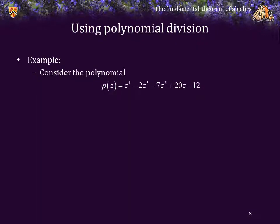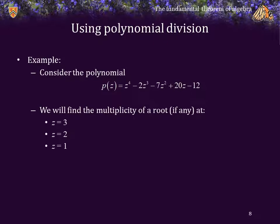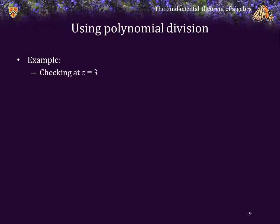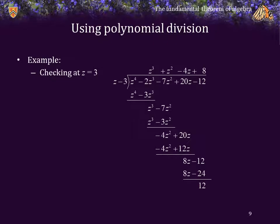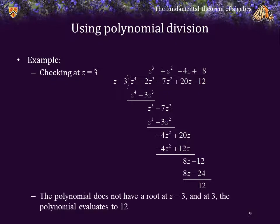Let's try it out as an example. Consider the following quartic polynomial. We will determine the multiplicity of a root, if any, at the points z equals 3, 2, and 1. Starting at z equals 3, we divide the polynomial by z minus 3. After performing polynomial long division, we get a remainder of 12. Since 12 is non-zero, the polynomial does not have a root at z equals 3 — at z equals 3, the polynomial evaluates to 12.